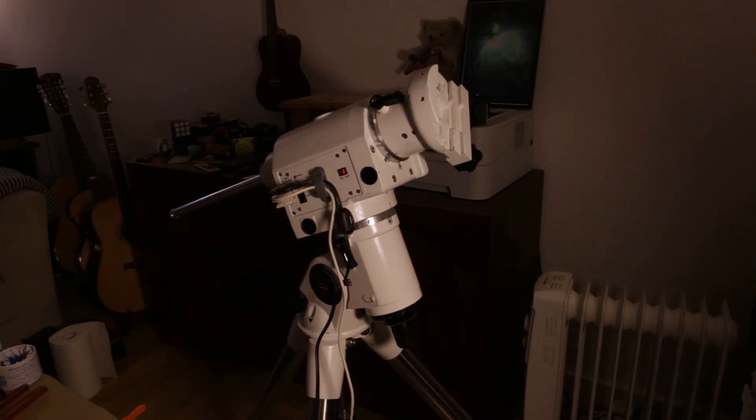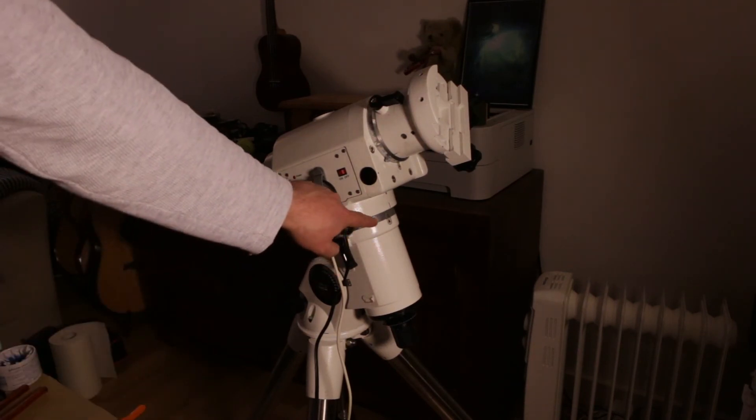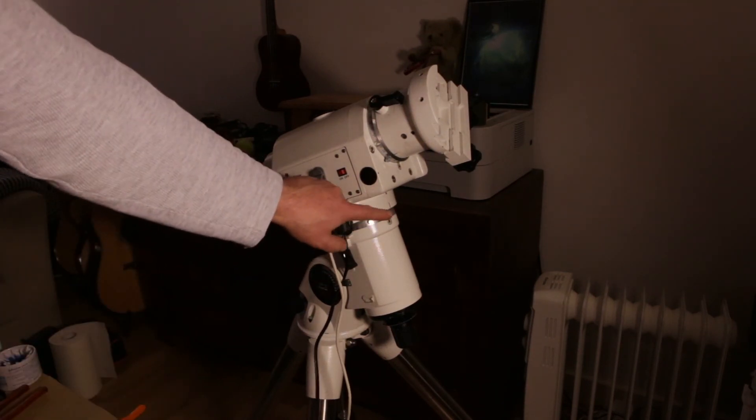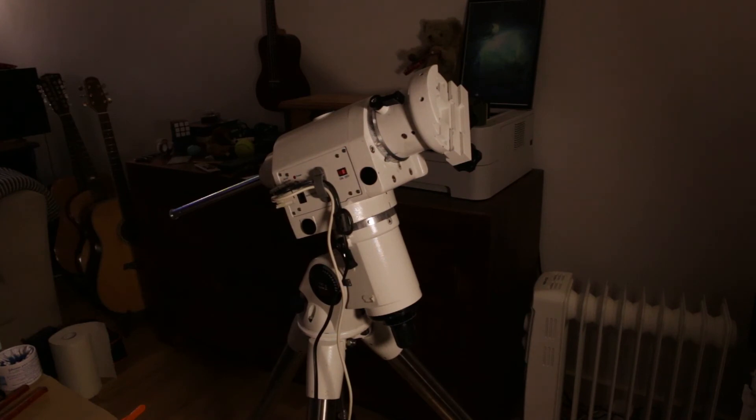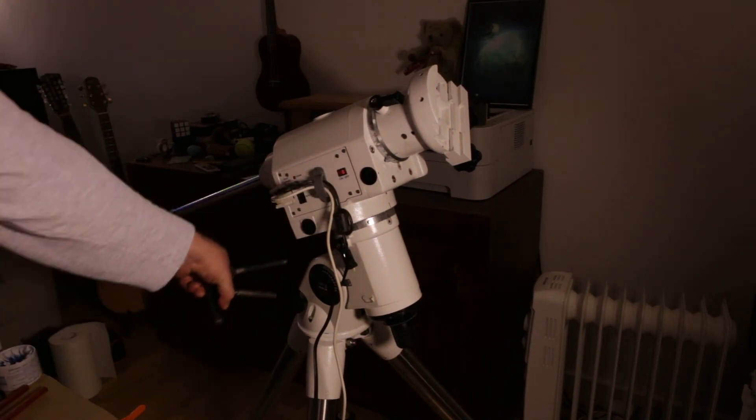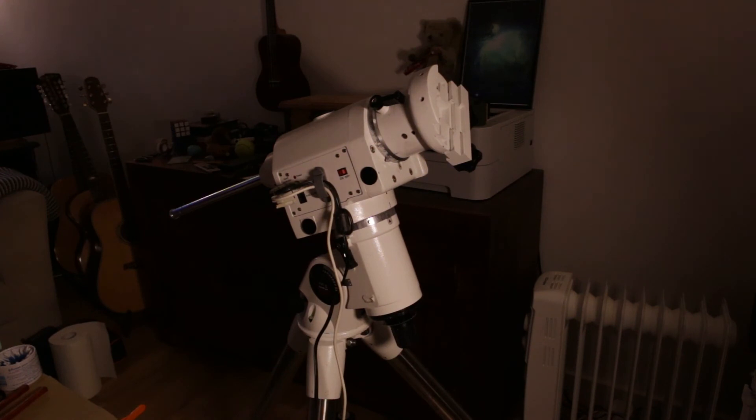So that pretty much concludes the belt modification kit. The only little mistake that I did was to actually fit this setting circle the wrong way around. But it doesn't really matter because I'm not using them anyway. So yeah, all that's left to do is to replace the latitude bolt back into the mount and give it a few turns and make sure that it's still working. And you're good to go.